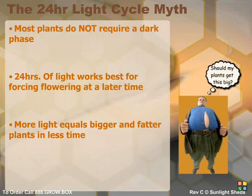Often, people recommend an 18 hours of light and 6 hours of darkness cycle, although we found that this results in slower results — not only in growth, but in the time it takes to begin flowering once you've cut back to 12 hours of light and 12 hours of darkness.